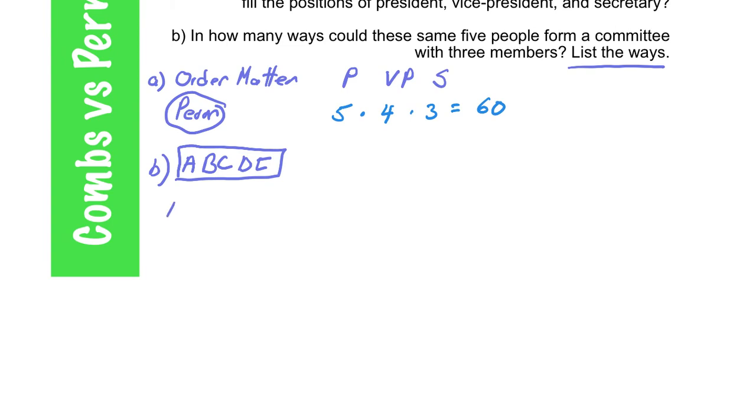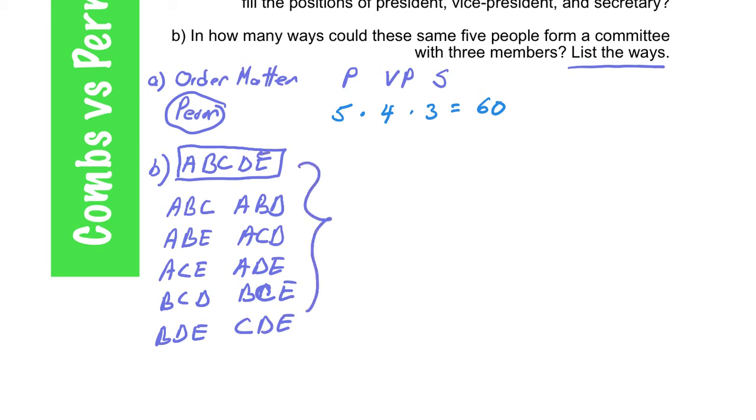Again, I'm just going to list them. So it's ABC, ABD, ABE, ACD. This gets a little tedious after a while. ADE. I'm doing all the various combinations of three people to form the committee. Sorry, that's supposed to be a C. And there I've got it. So once I list them all out, I have 10 ways.